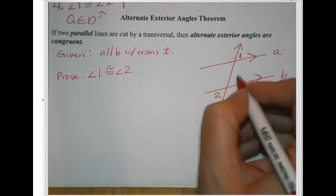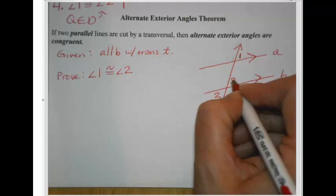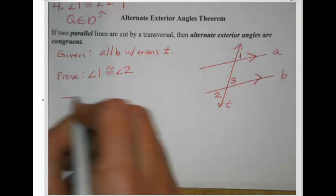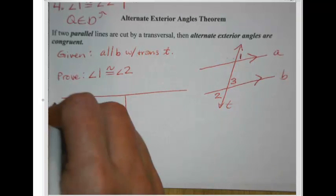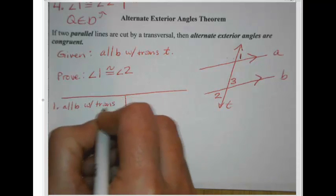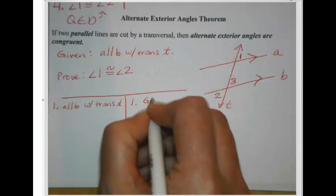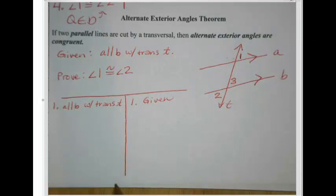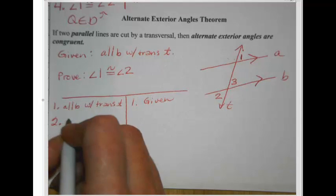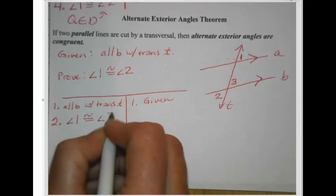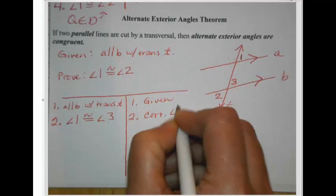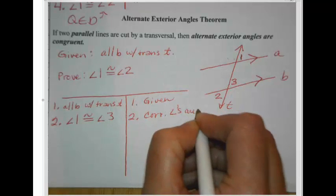Put an angle 3 in here — mine is right here, corresponding to one of the given angles, so I can talk about it in my proof. First statement: list the givens — A parallel to B with transversal T, justified as given. Then talk about angle 1 and angle 3's relationship: angle 1 is congruent to angle 3 because, in my picture, they are corresponding angles. Corresponding angles are congruent — that's our postulate.